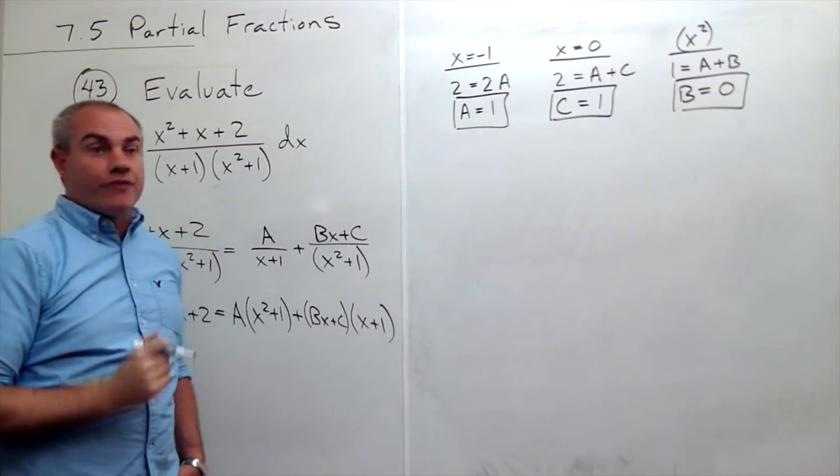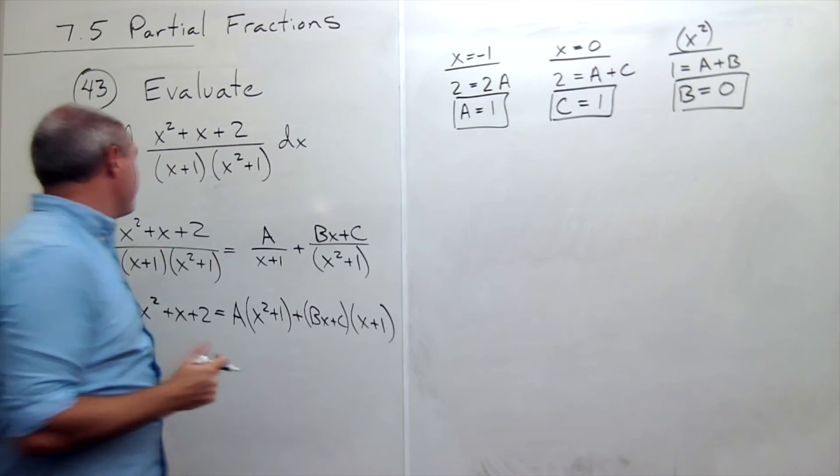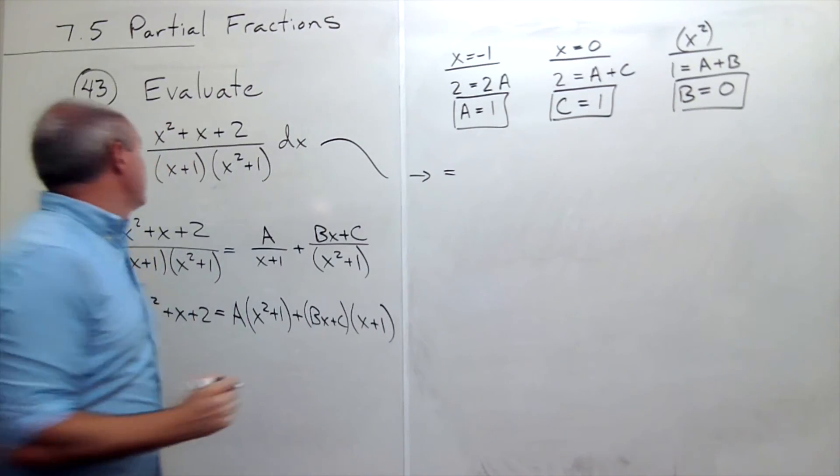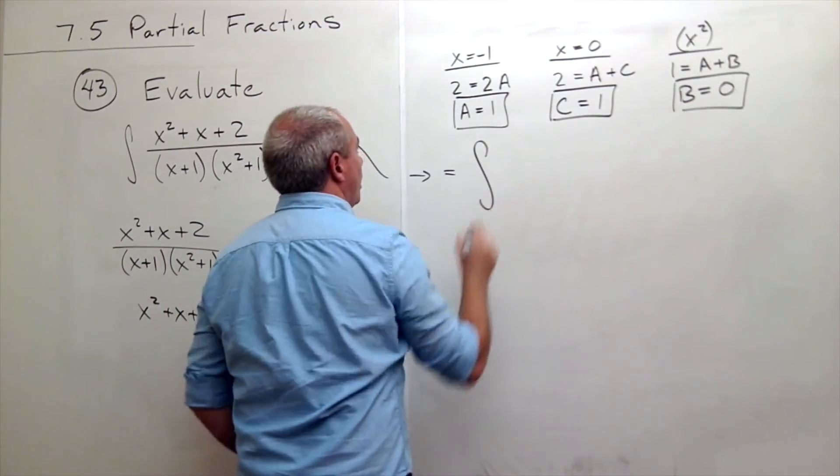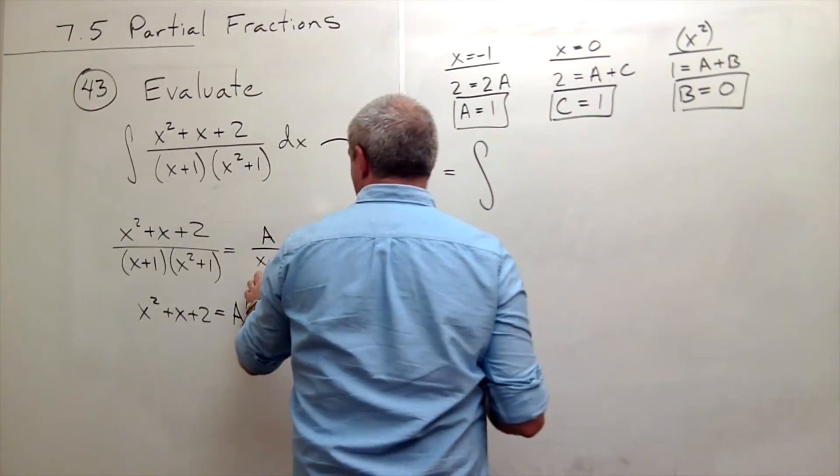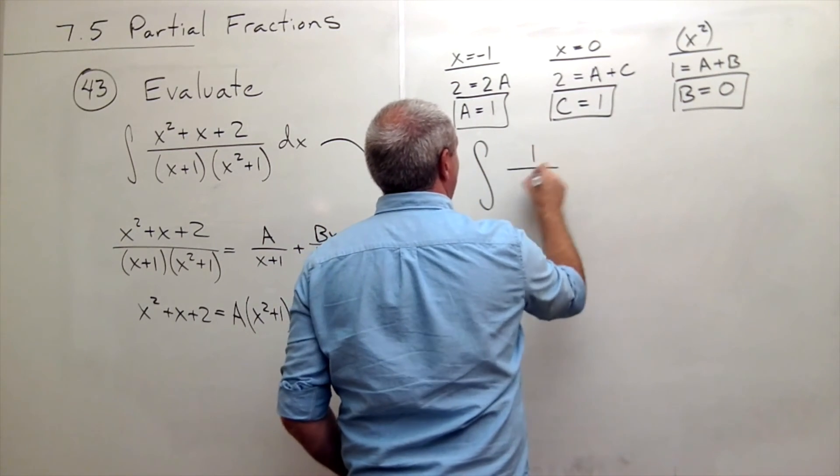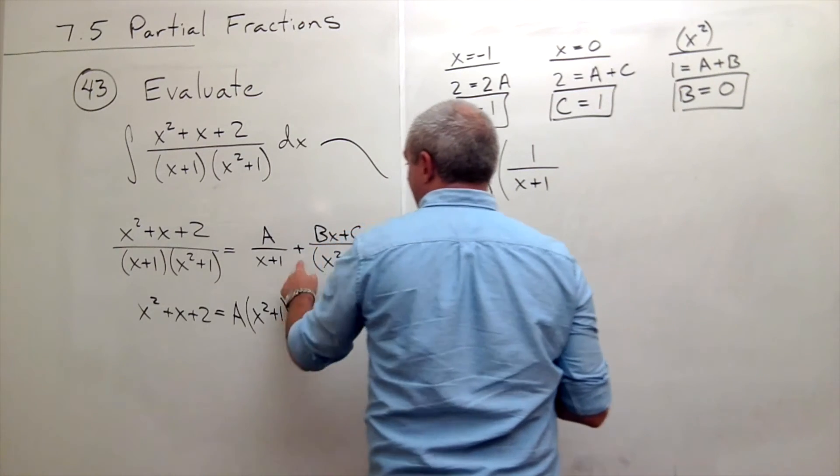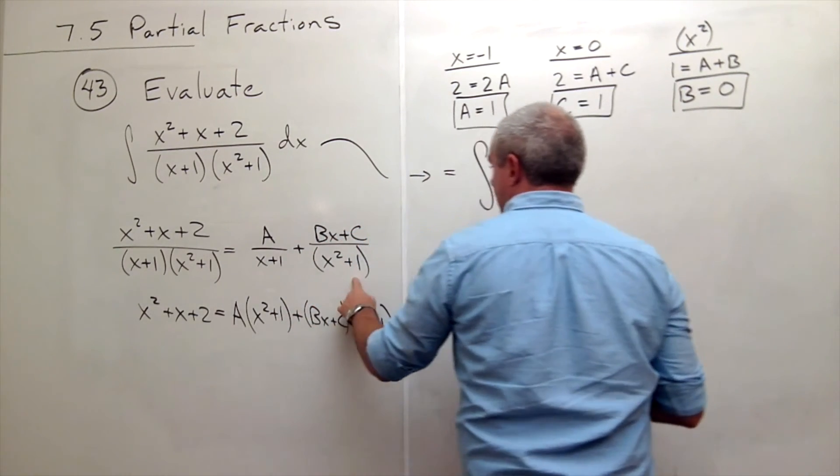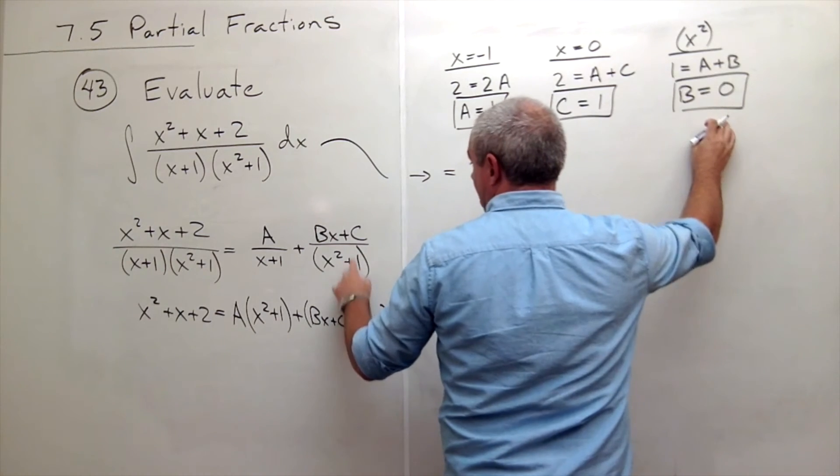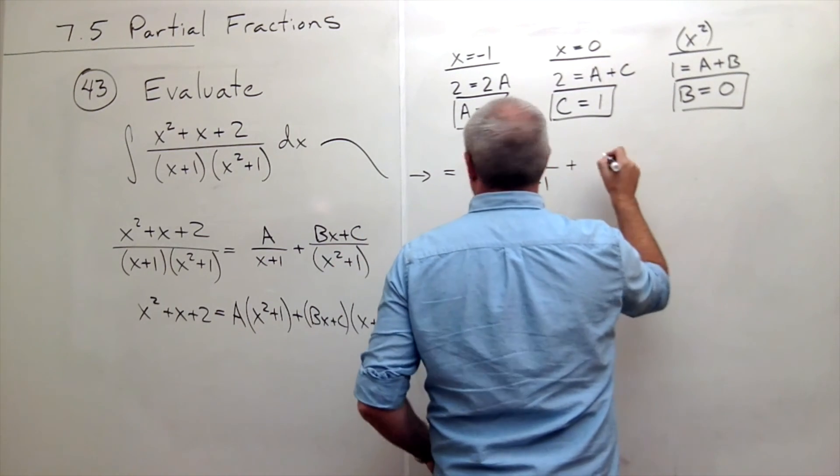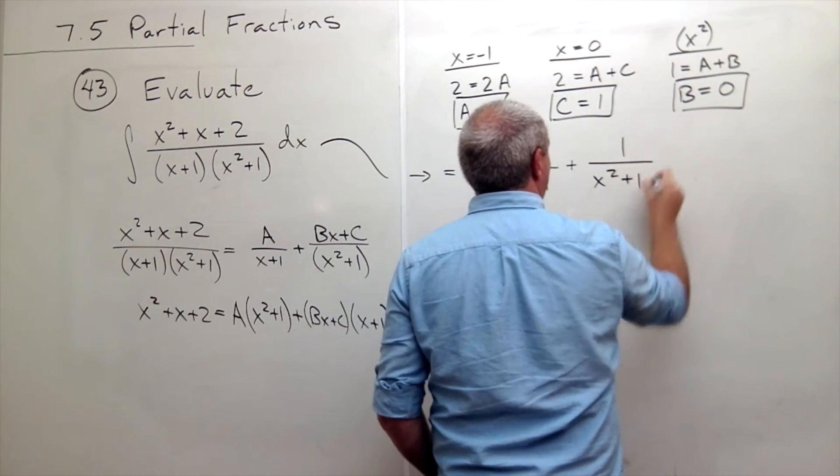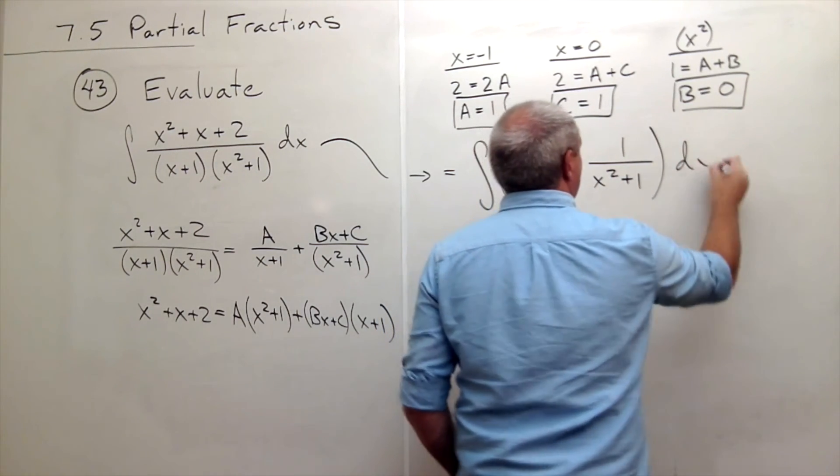And now we're ready to rewrite this integral using our partial fractions. This integral is equal to the integral of a over x plus 1. So this is 1 over x plus 1, plus bx plus c over x squared plus 1. b is 0, so it's just c, so 1 over x squared plus 1 dx.